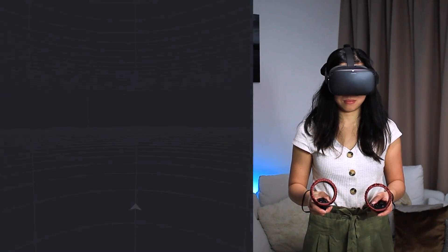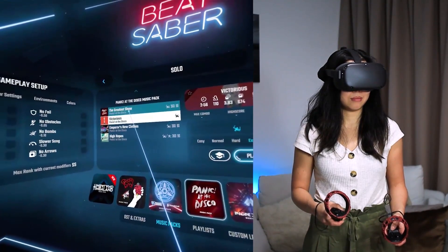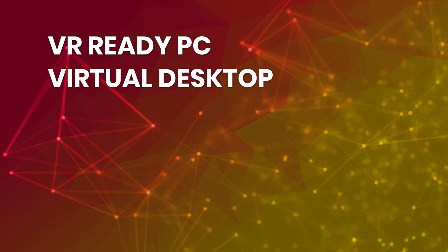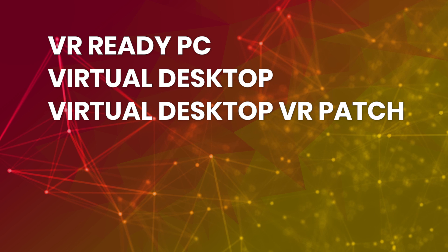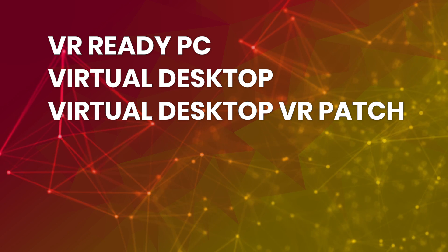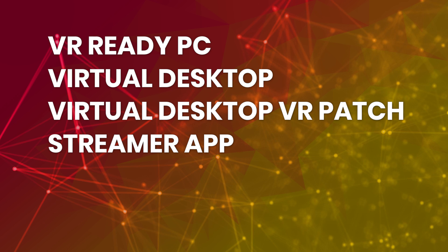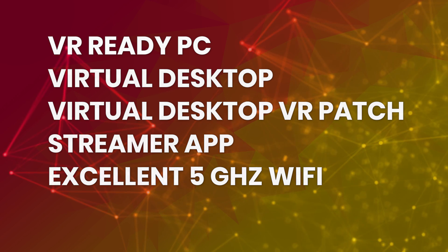I've been using Virtual Desktop for quite a while on Quest 1, and the quality is already very good, though there is still some latency. It's entirely playable if you have what it needs. You'll need a VR-ready PC, the Virtual Desktop app from the Oculus Store for $20, the free Virtual Desktop VR patch from SideQuest (which requires sideloading), the Virtual Desktop Streamer app for PC (free download), and a good 5GHz WiFi connection. This sounds like more work than it is — after initial setup, it works effortlessly.